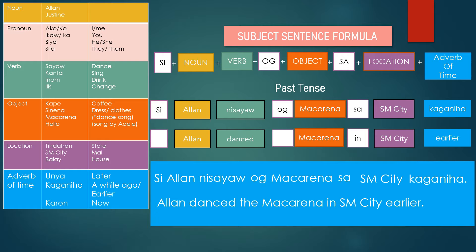To recap: Si Alan, Ni Sayaw, Og Makarena, Sa SM City, Kaganiha. That means: Alan danced Makarena in SM City earlier.